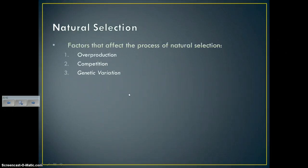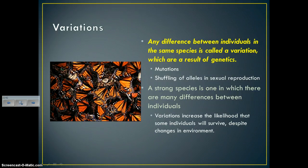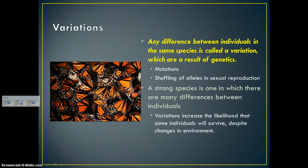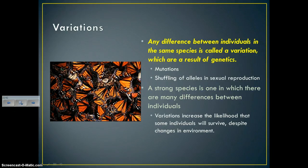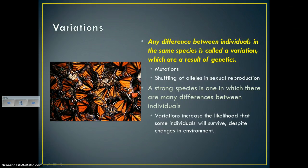The last factor affecting natural selection identified by Darwin was genetic variation — any differences between individuals of the same species. This results from alleles being passed down, the shuffling of alleles during meiosis, crossing over, and mutations. A strong species is one with many differences between individuals, so more genetic variation equals an overall stronger species. Variations increase the likelihood that some individuals will survive despite environmental changes. If all corn were genetically identical and susceptible to a pest, how much of that corn would survive when the pest arrives? None.